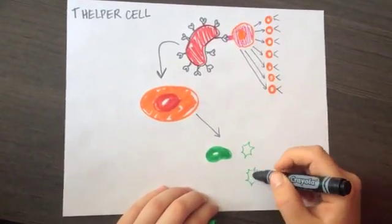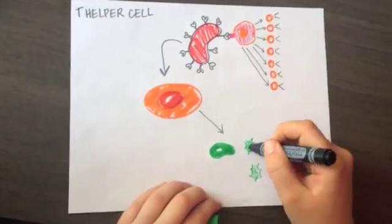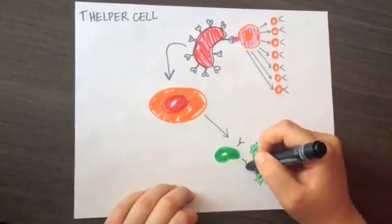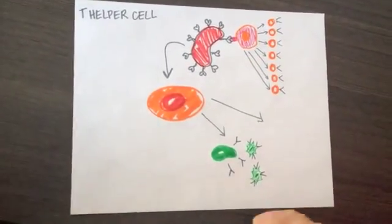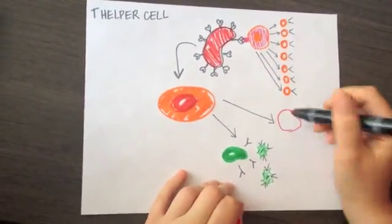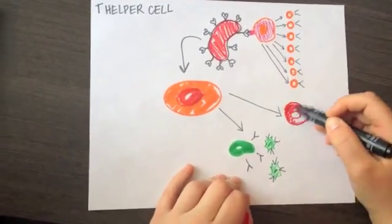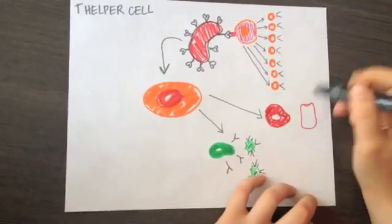Signals from helper T cells also activate killer T cells, which kill infected cells with a protein that ruptures the cell membrane.